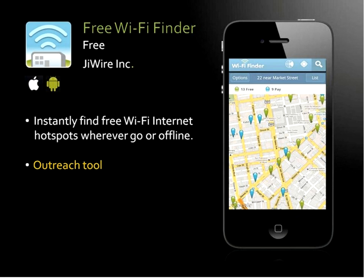If you're doing outreach, this is a must-have app: a Wi-Fi Finder. For those of you who have worked on a bookmobile, you know how much of a challenge it is to connect to Wi-Fi. This is a really great tool to have when you're doing outreach. This app allows you to find free Wi-Fi internet connections and hotspots everywhere you go, and you can do this offline. It's a wonderful tool to get access to or find internet access.